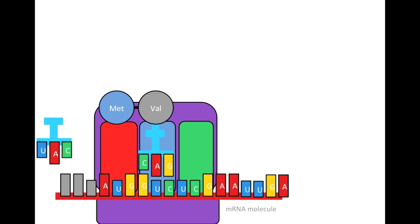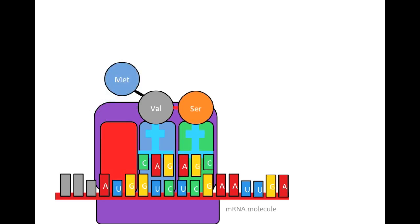A new tRNA will enter into the A site. Again, the anticodon from the tRNA will match the codon on the mRNA, and the tRNA will bring with it an amino acid in the A site. Again, a peptide bond will form, and the bond between the tRNA and the P site will be cleaved.